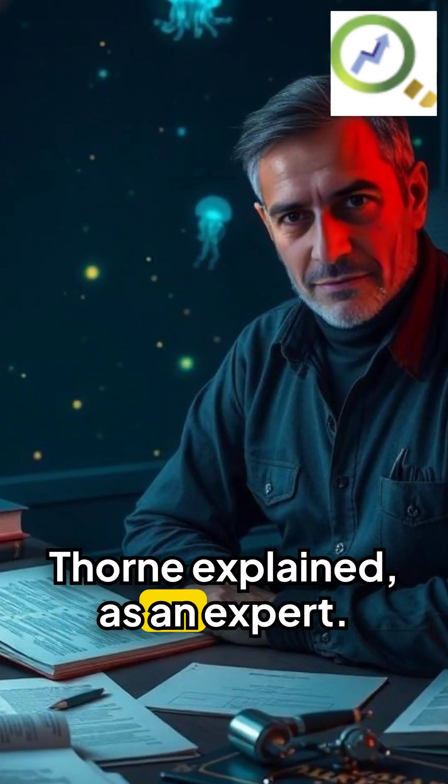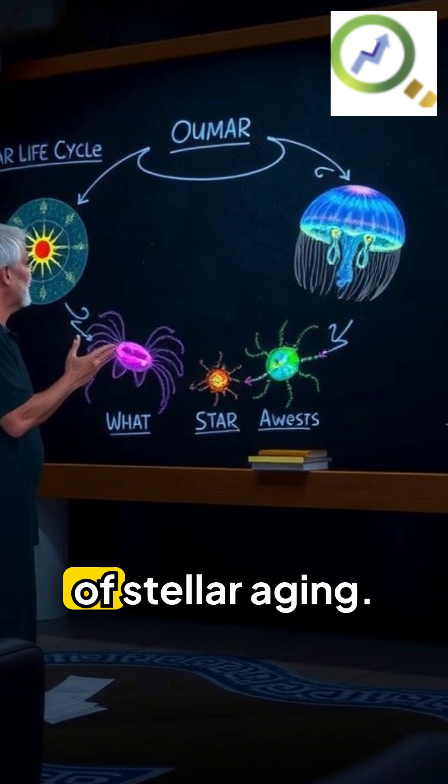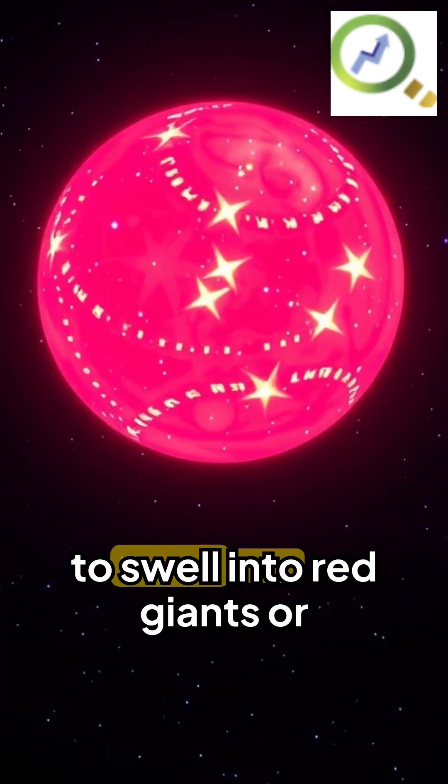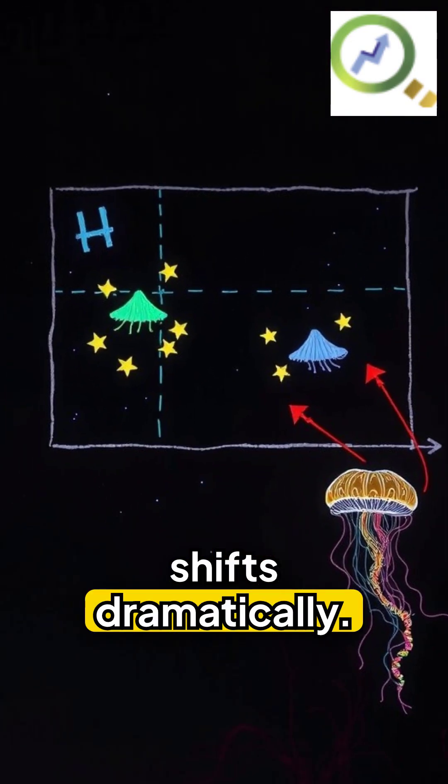Dr. Aris Thorne explained that's when things get interesting. Stars start to swell into red giants, or supergiants. Their position on the HR diagram shifts dramatically.